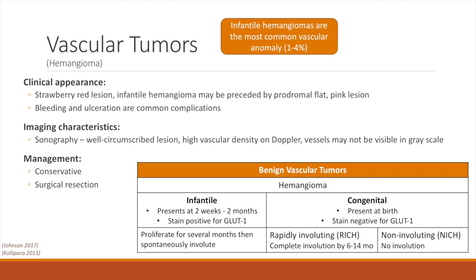Congenital hemangiomas, as the name suggests, are present at birth. These hemangiomas can be classified based on their resolution. Rapidly involuting hemangiomas will completely resolve by 6 to 14 months of age, whereas non-involuting will show no change. These lesions have a very distinctive clinical appearance, classically referred to as the strawberry hemangioma, due to their strawberry red-pink coloring. In some cases, infantile hemangiomas may be preceded by a flat pink lesion, and in some cases hemangiomas may ulcerate and bleed.